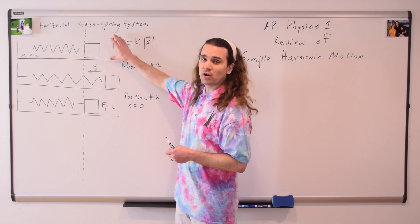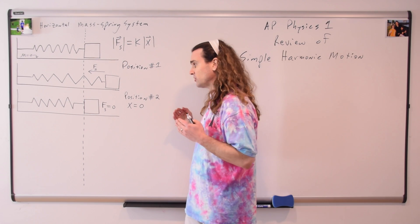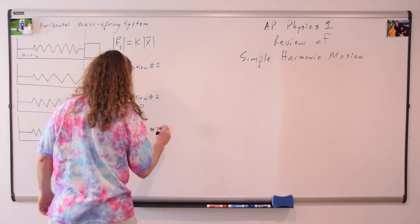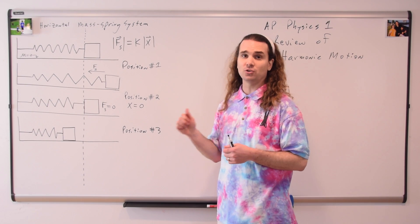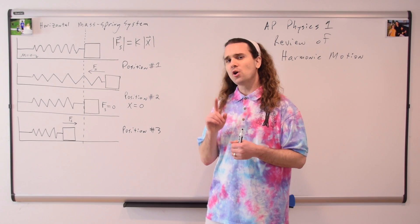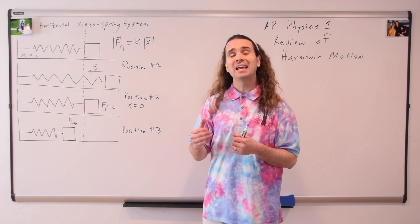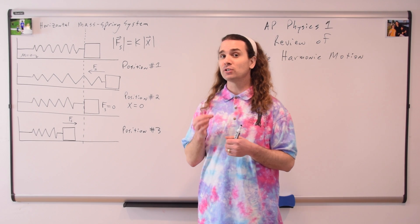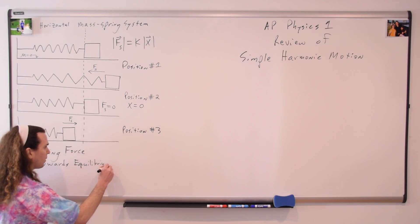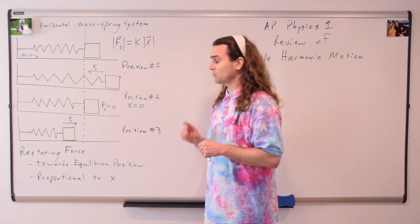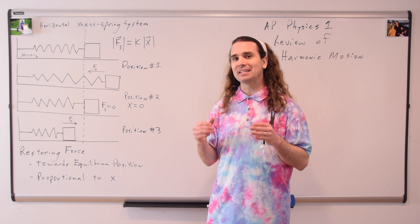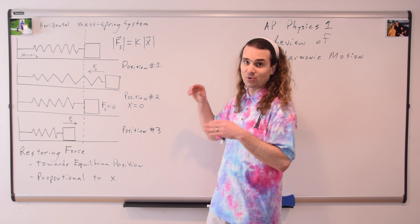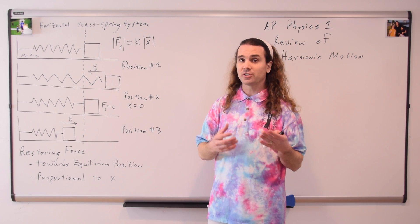Notice this is different than our first drawing where the velocity of the block was equal to zero. Here, the velocity of the block is actually to the left, and the block will continue to move to the left. Let's call this position number three. Notice here that the force of the spring is to the right. The force of the spring is always pointed toward the equilibrium position and increases proportionally with the displacement from equilibrium position. This force of the spring is called a restoring force. A restoring force is what causes simple harmonic motion, and simple harmonic motion is the idea that this object will go from position one to two to three to two to one, and so on, continuing without friction forever.